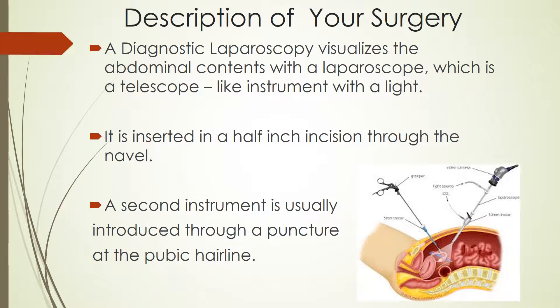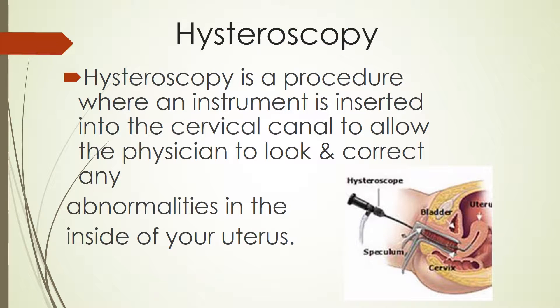A diagnostic laparoscopy visualizes the abdominal contents with a laparoscope, which is a telescopic-like instrument with a light inserted on the end. It is inserted through a half-inch incision through the navel. A second instrument is usually introduced through a puncture of the pubic hairline. A hysteroscopy is a procedure where an instrument is inserted into the cervical canal to allow the physician to look at and correct any abnormalities inside of your uterus.